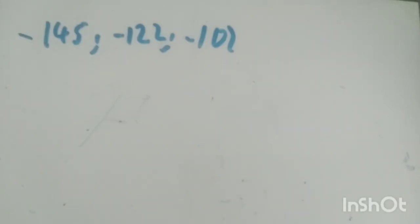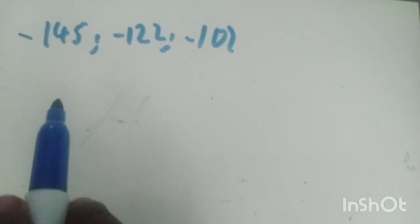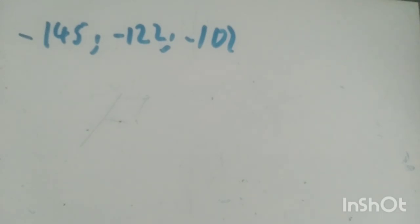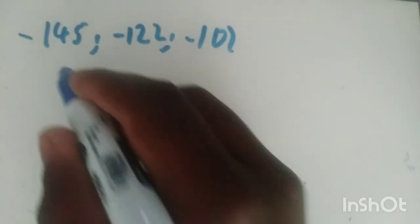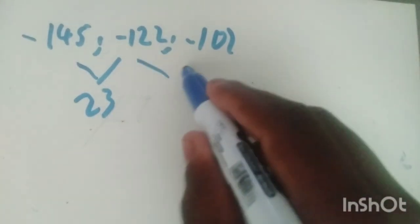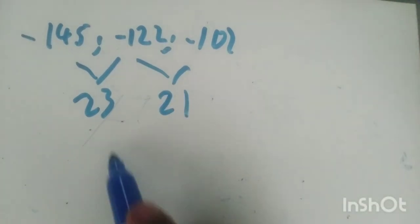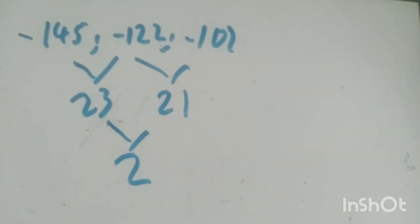First of all, we have to find the first differences. Negative 122 minus negative 145 becomes negative 122 plus 145, which gives us 23. Then negative 101 minus negative 122 becomes negative 101 plus 122, which gives us 21. So the second difference is going to be negative 2 — this is a quadratic pattern.